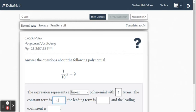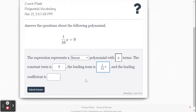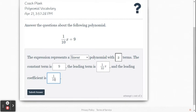The constant term, that's the number, so the constant is nine. The leading term is one-tenth, and then we need the x. And then the lead coefficient, that's just the one-tenth, one over ten.